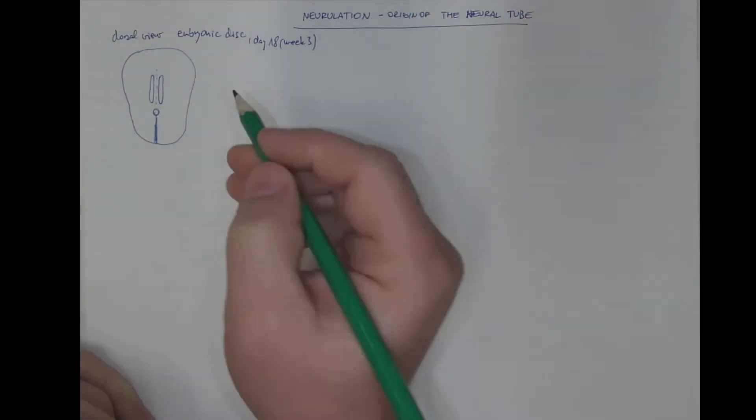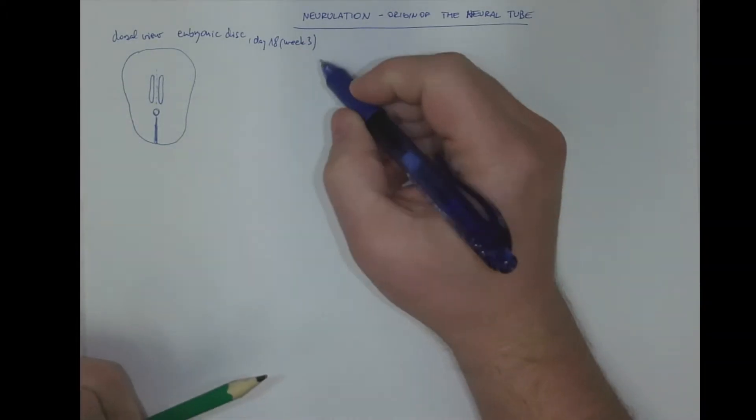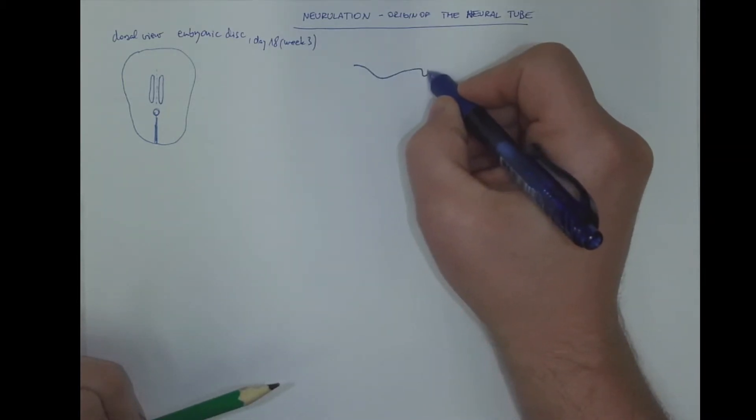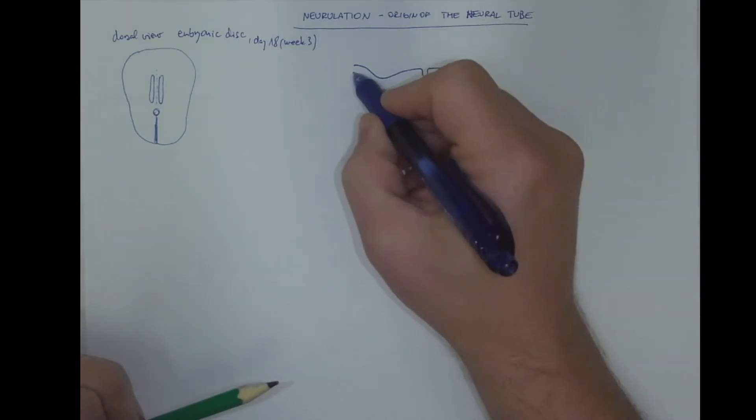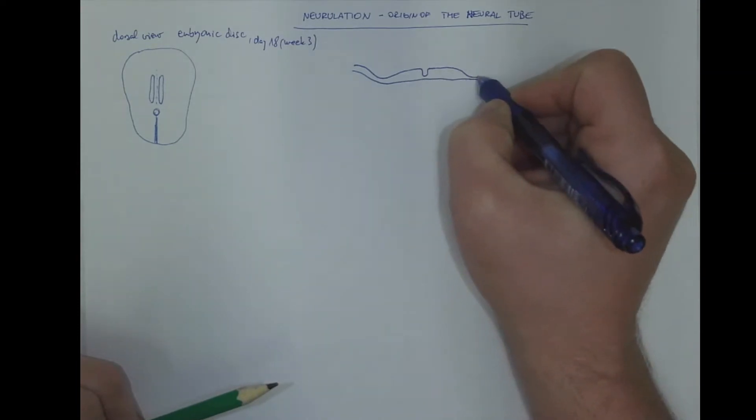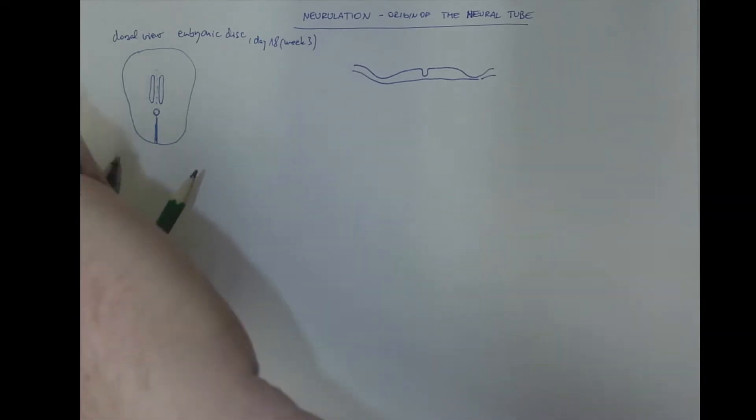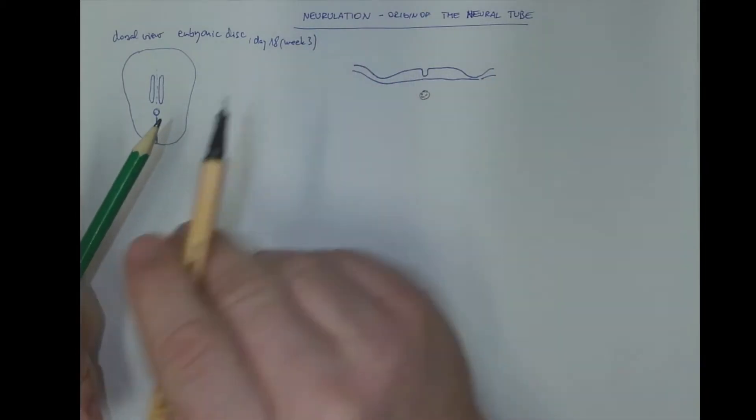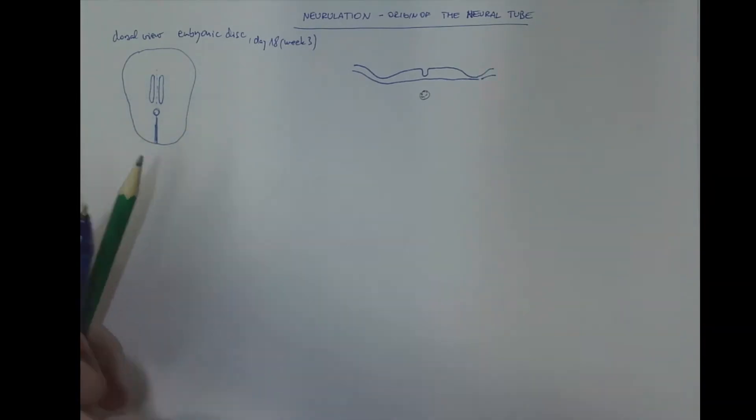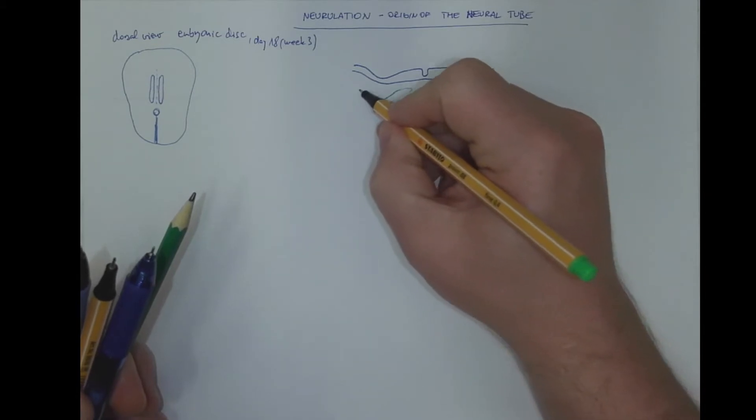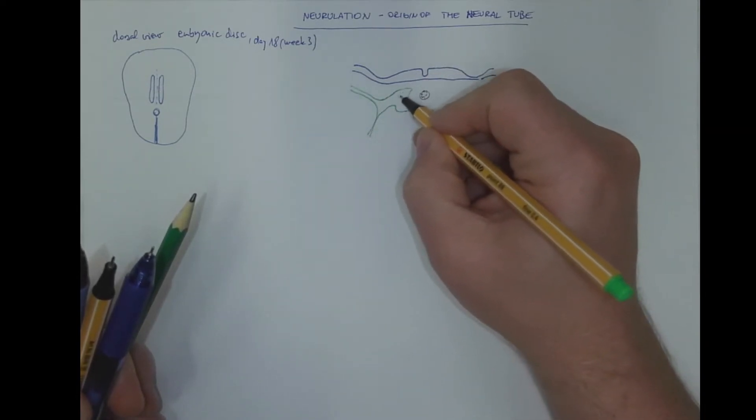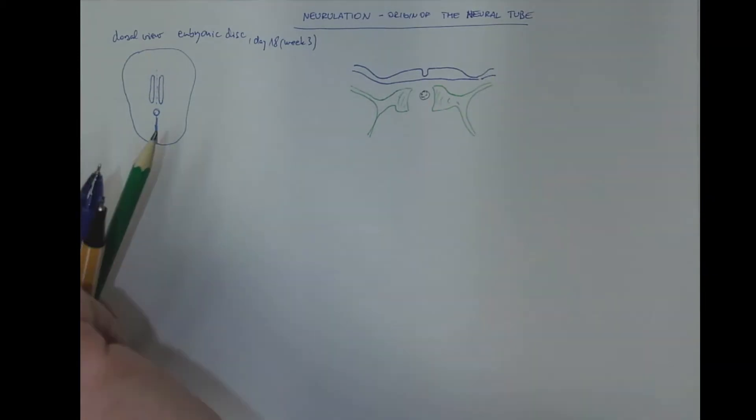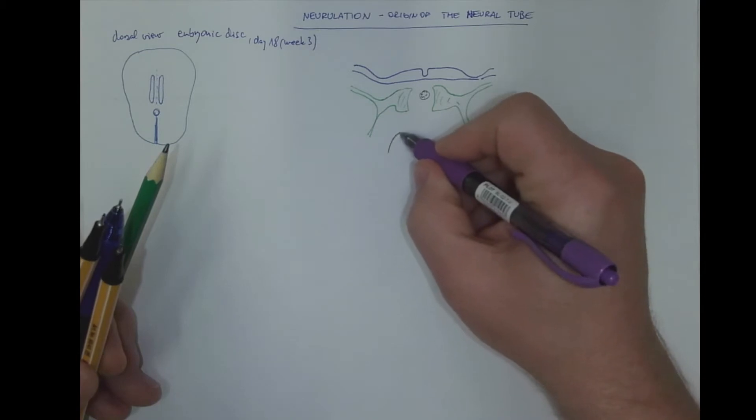If we make a cross-section to elucidate that better, we can see that the ectoderm is thickened to form the neural plate. In the midline there is a neural groove. Below there is a notochord, which is inducing some of these changes. And we got also the mesoderm on both sides of the notochord. Eventually there is the endoderm of the primitive gut.